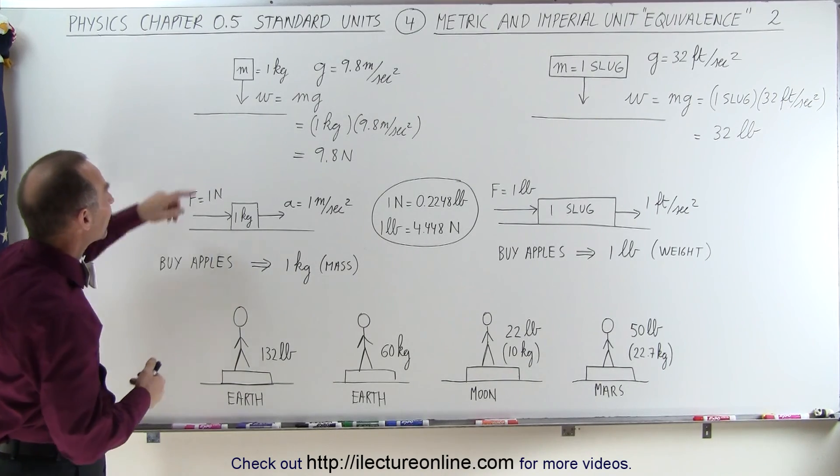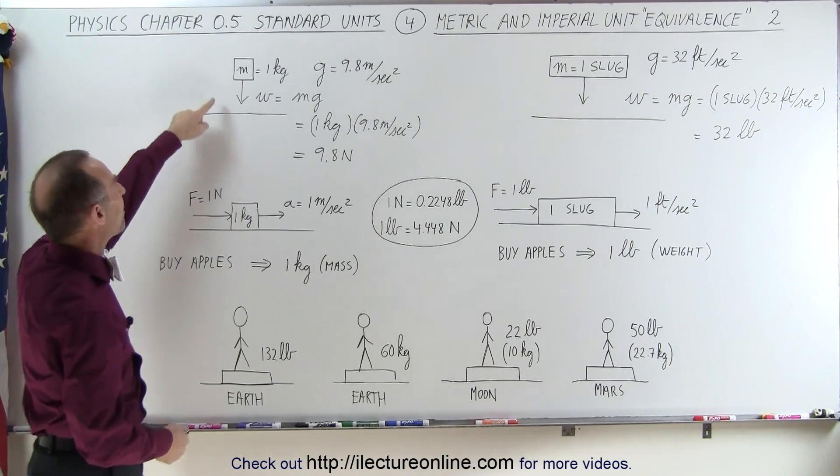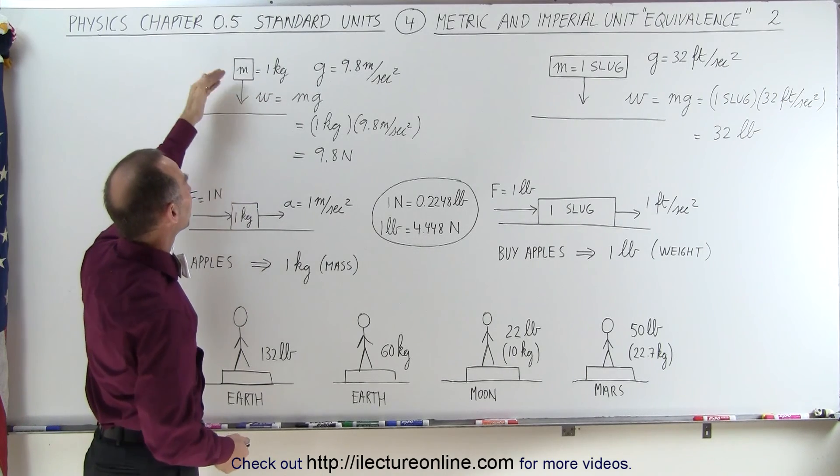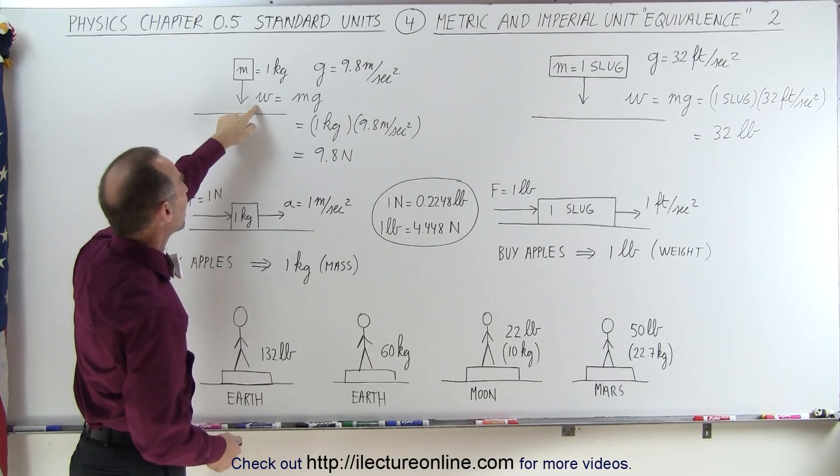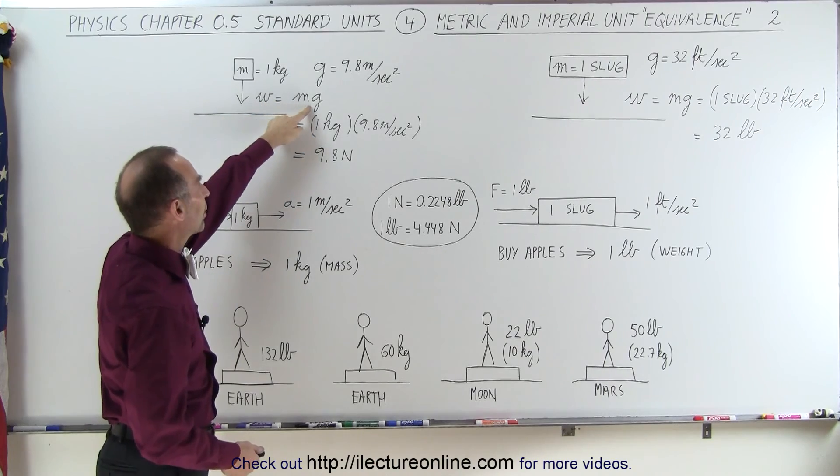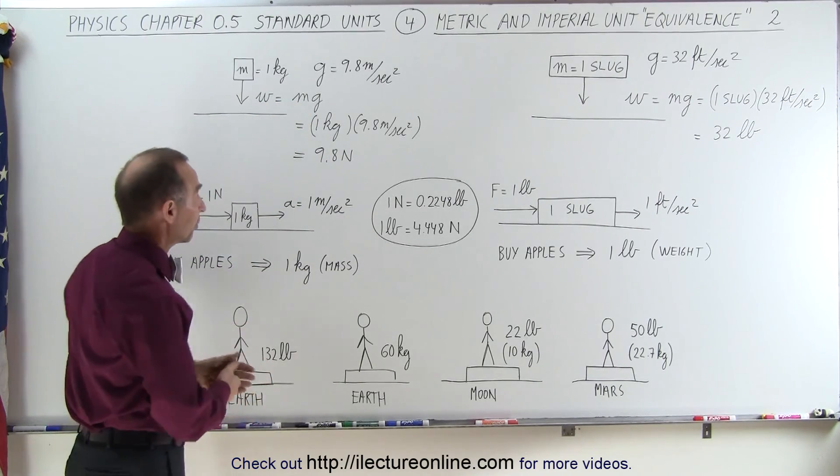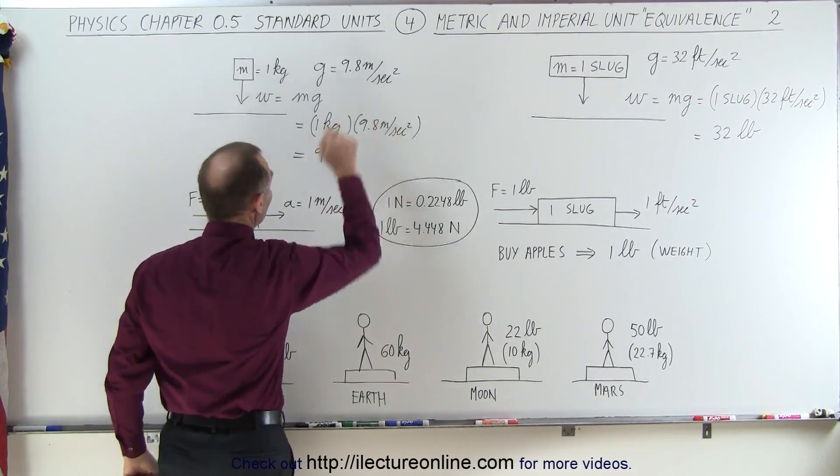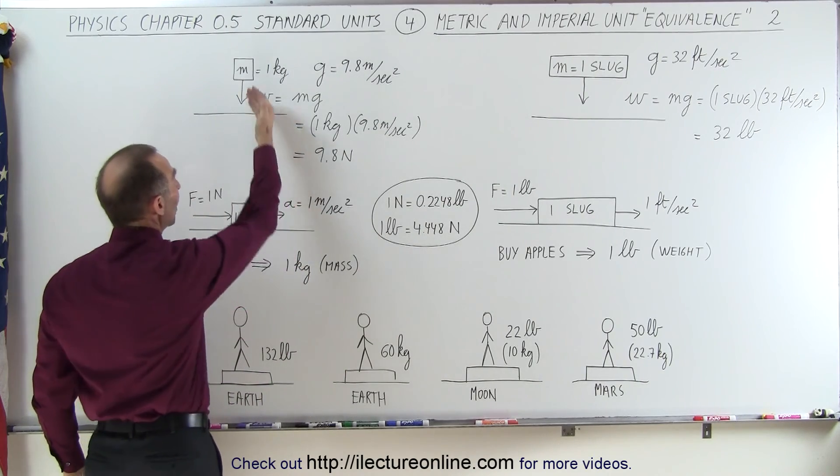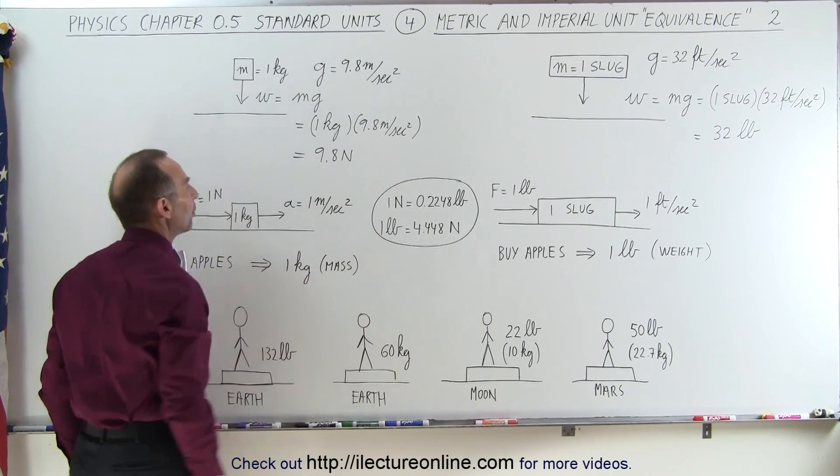Now notice, just like in the previous video, if we have a mass equal to 1 kilogram subjected to the gravitational force of the Earth, the weight will simply be the mass times acceleration due to gravity, which in the metric system is 9.8 meters per second squared, which means the weight of that object will be 9.8 newtons.